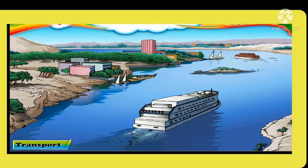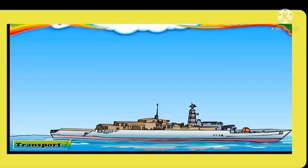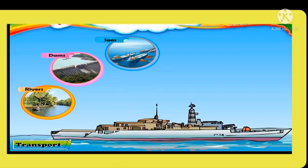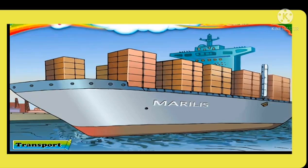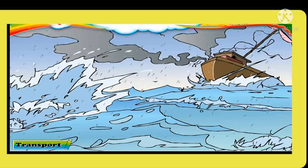Waterways is the cheapest mode of transport as there is no need to build any transport route, though it is the slowest mode of transportation. This mode of transport is carried out through rivers, seas and dams. We can transfer heavy goods by waterways, but it is dangerous during stormy weather and monsoons.